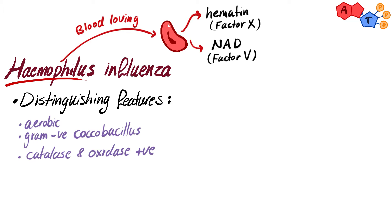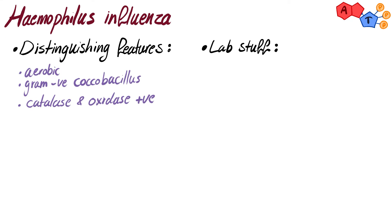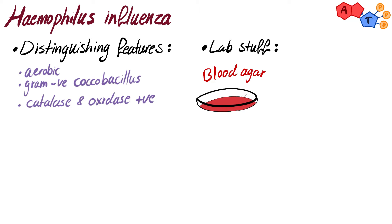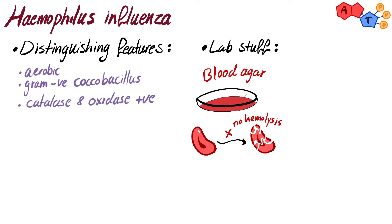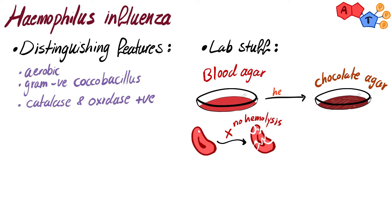Since we're talking about how Haemophilus influenzae grows, let's move on to the lab. You might think it grows on blood agar because of its requirement for factor X and V. However, Haemophilus influenzae is incapable of blood hemolysis, so it can't grow on blood agar by itself. Instead, we use chocolate agar, which is a blood agar that has been heated and lysed, providing hematin and NAD from the lysed RBCs for growth.